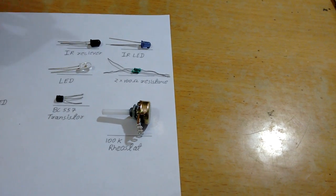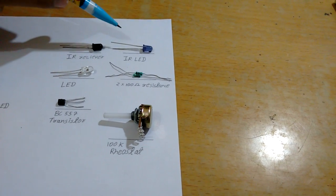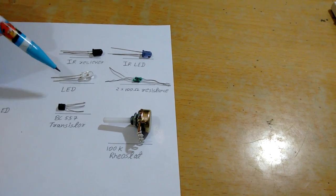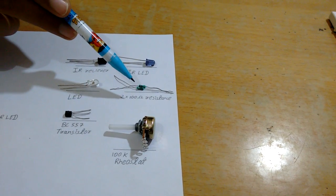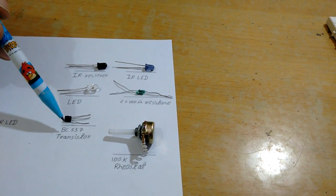The parts you will need are an IR receiver, an IR LED, an LED, a 200 ohm resistor, and a BC 557 transistor.